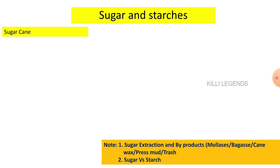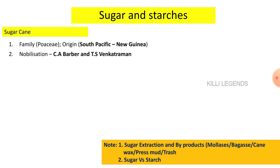We know that sugar and starch are different. Sugar is a simple sugar — that is, a monosaccharide or disaccharide. Starch is a polysaccharide. Sugar has a sweet taste and is used for both industrial and commercial purposes. Sugarcane is used for commercial use as the first crop.